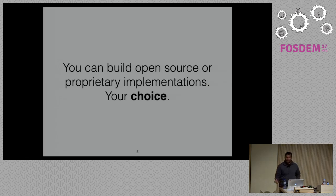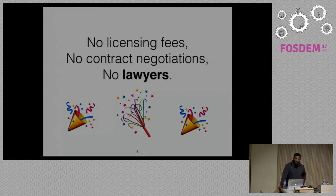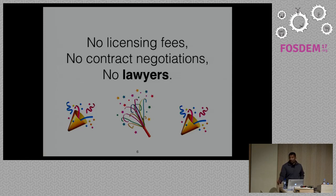The nice thing about RISC-V being an open ISA is that you don't have to pay any licensing fees, you don't have to deal with lengthy contract negotiations, and you don't have to deal with lawyers. Licensing fees can add up substantially for low-cost IoT devices. Contract negotiations can take 6 to 12 months with ARM and other vendors, which can kill a startup with VCs breathing down your neck.